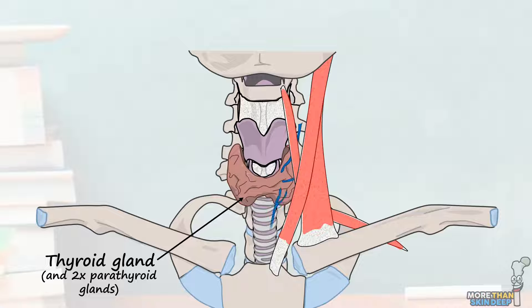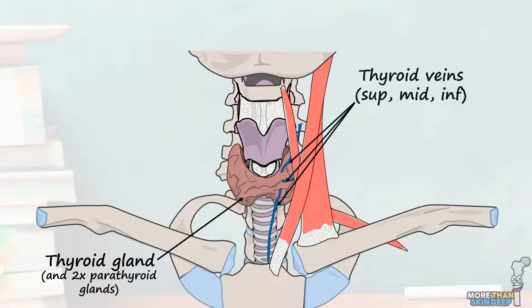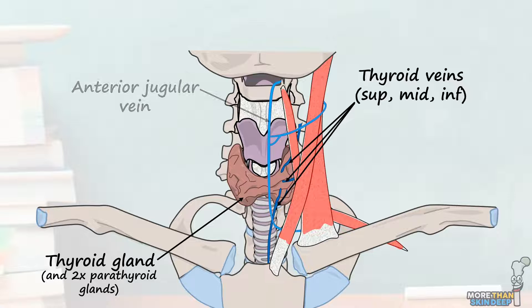Important veins in the muscular triangle include the superior, middle, and inferior thyroid veins, which drain the thyroid gland, and the anterior jugular vein, which originates higher up but passes down the anterior neck, going through the muscular triangle on its way.